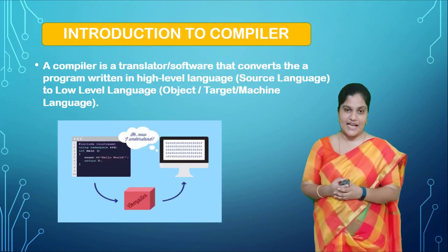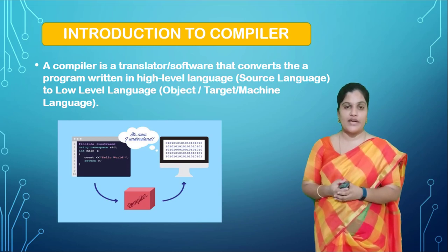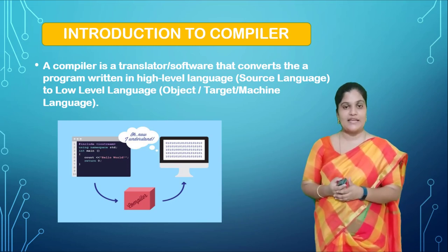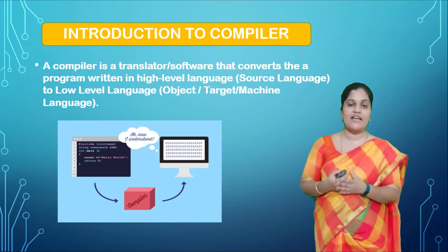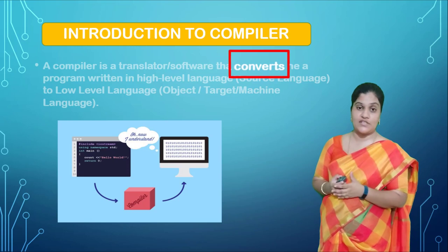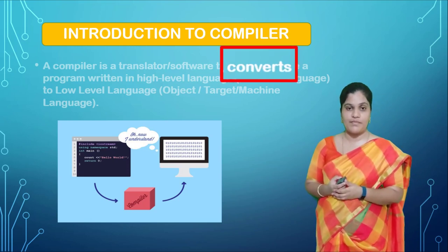Coming to the definition of compiler: a compiler is a translator or software which will convert a program written in high level language to low level language. Observe the word 'convert' here — that is a very important thing you need to remember.